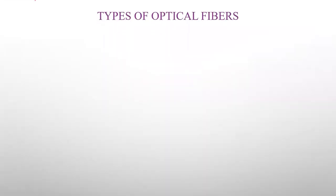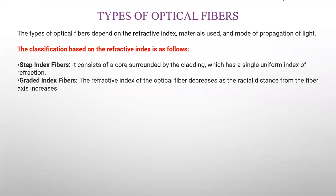Now, types of optical fibers. The type of optical fiber depends upon the refractive index, the material used, and the mode of propagation of light. Based on refractive index, we can have two types: one is called step index fiber, and the other one is called graded index fiber.